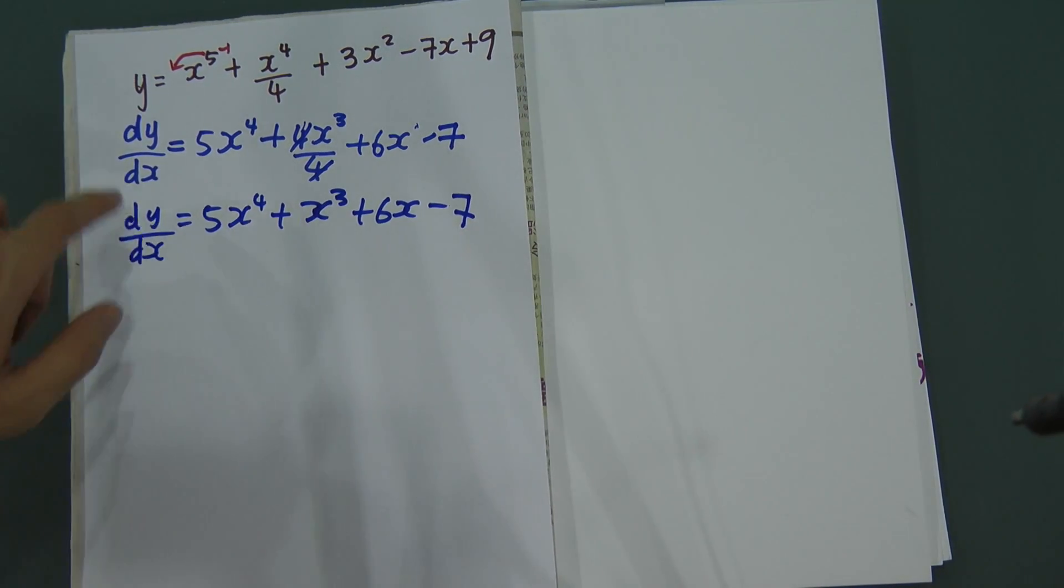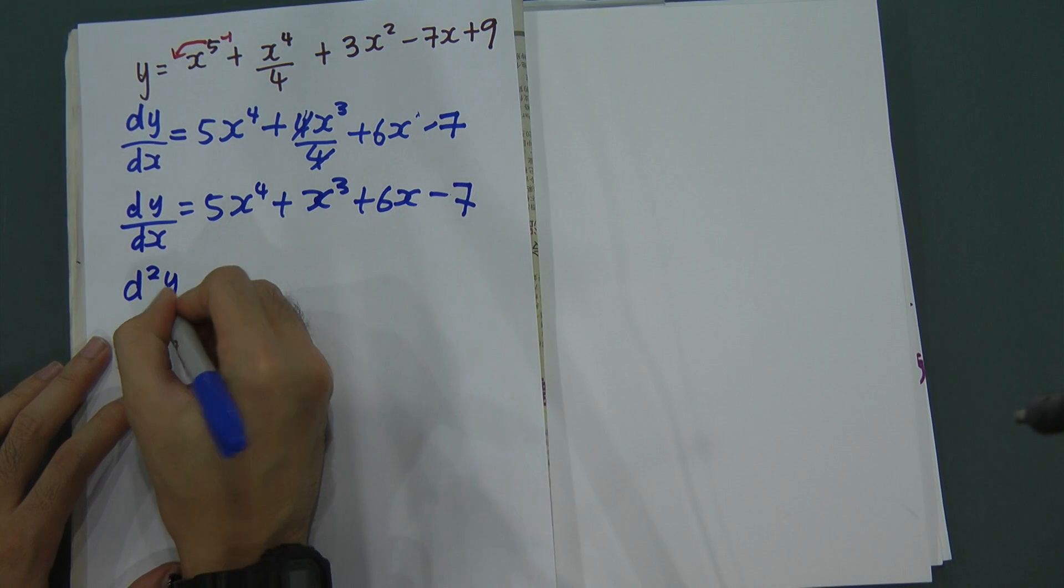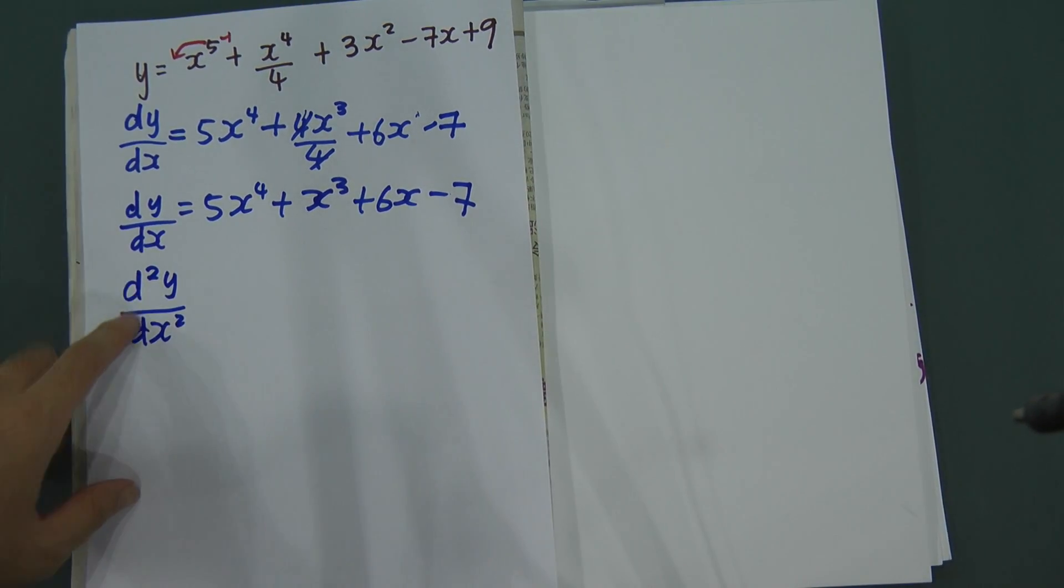This is when we differentiate the first time. What happens when we differentiate the second time? When we differentiate the second time, this one is called d2y dx squared. This one is called differentiate the second time.